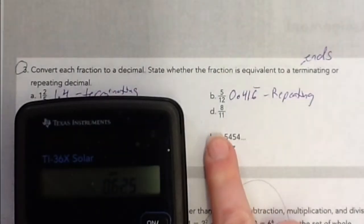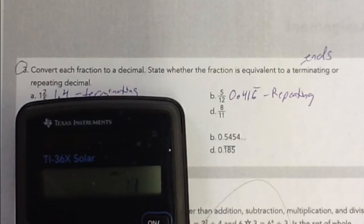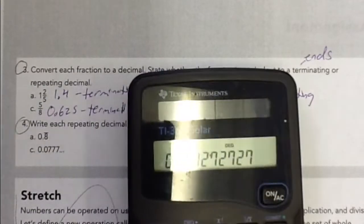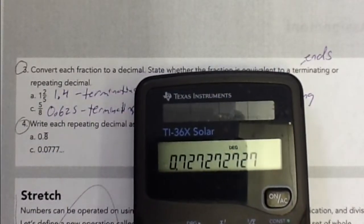And then the last one is 8 over 11, so we'll do 8 divided by 11. And we get 0.72 repeating.